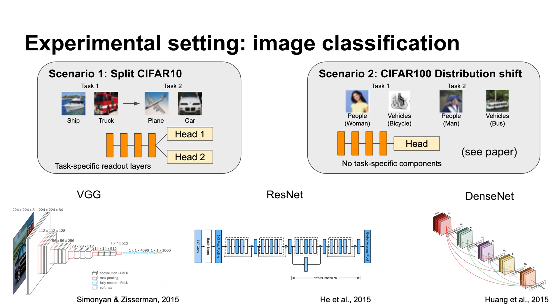We're going to look at three network architectures: VGG, ResNet, and DenseNet, just to make sure that our conclusions aren't specific to a particular structure.